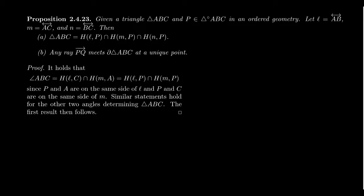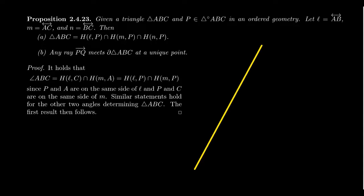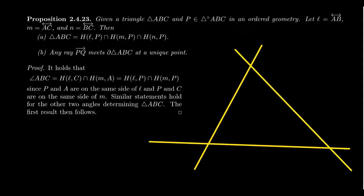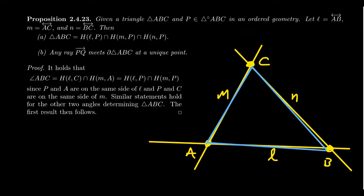There are two parts. Suppose triangle ABC is given and P is an interior point. Consider the lines determined by the boundary: line L is AB, line M is AC, and line N is BC. In the diagram, we label the vertices A, B, C, so that L is AB, M is AC, and N is BC, forming the triangle ABC highlighted here. P is some point interior to the triangle.